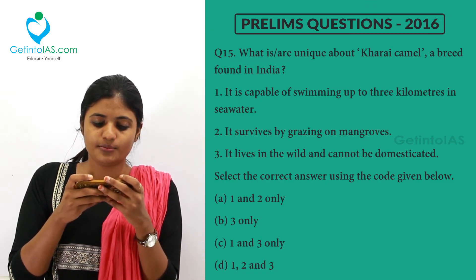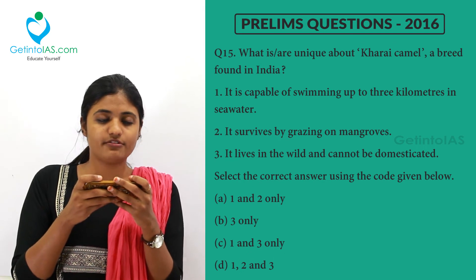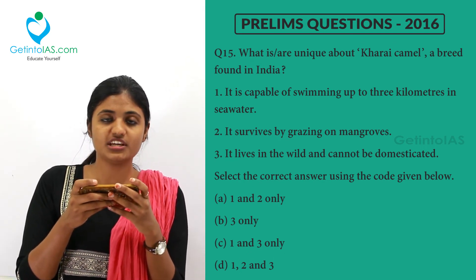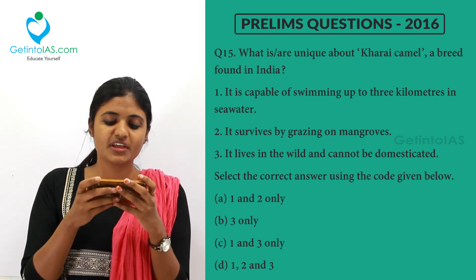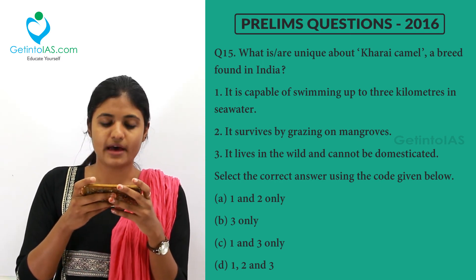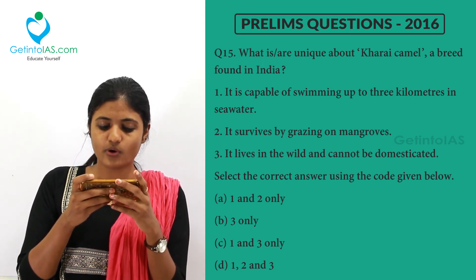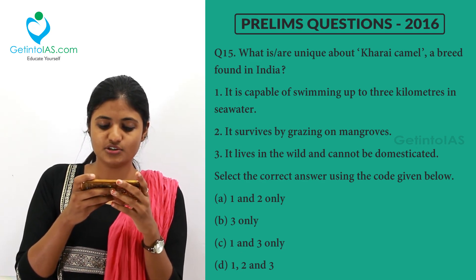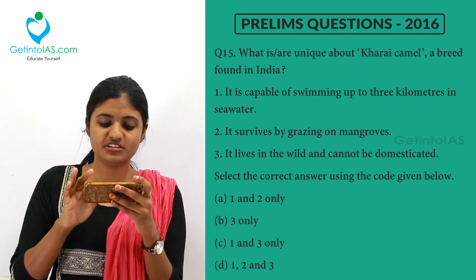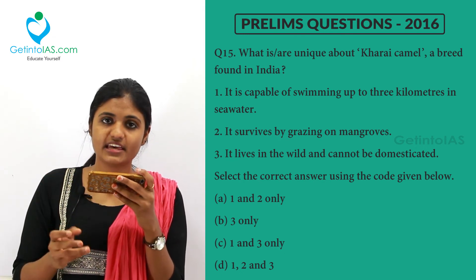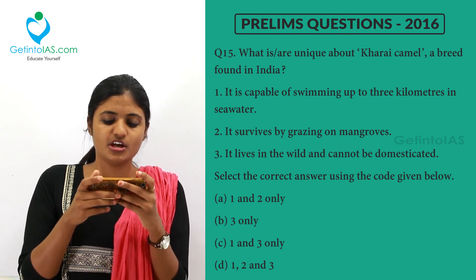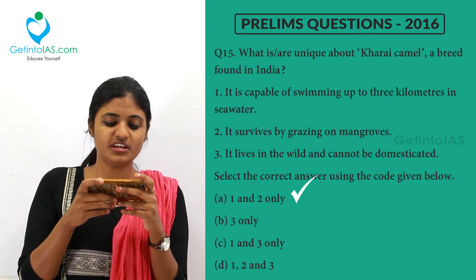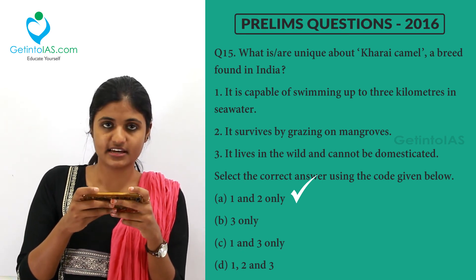What is unique about the Kharai camel, a breed found in India? It is capable of swimming up to three kilometers in seawater and survives by grazing on mangroves. The third option — that it lives in the wild and cannot be domesticated — is wrong, because Kharai camels can be domesticated. So option A (1 and 2) is the correct answer.